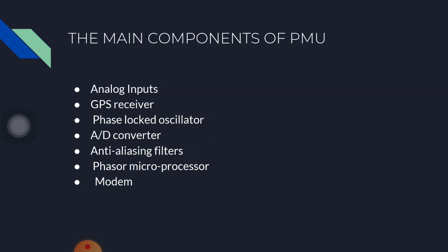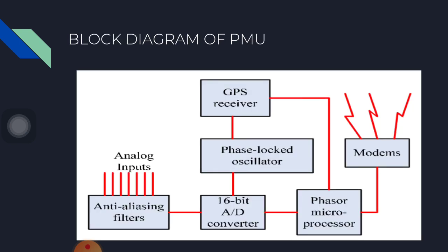The main components used in a PMU are: analog inputs, GPS receiver, phase-locked oscillator, AD converters, anti-aliasing filters, phasor microprocessor, and modem.